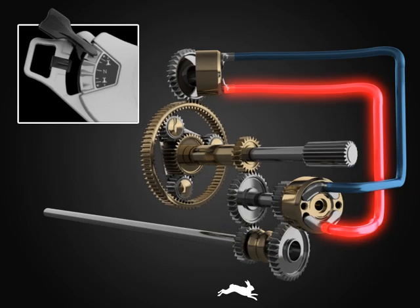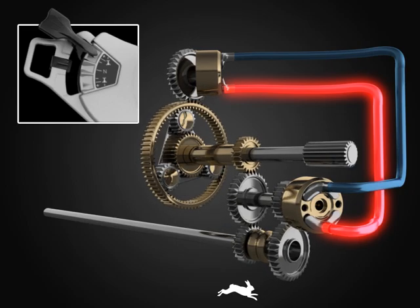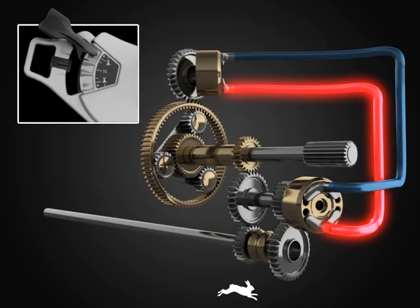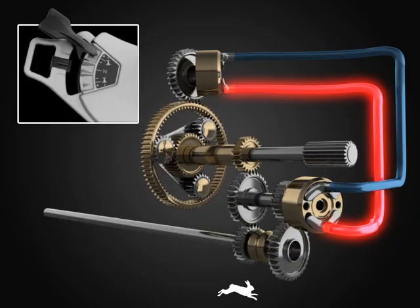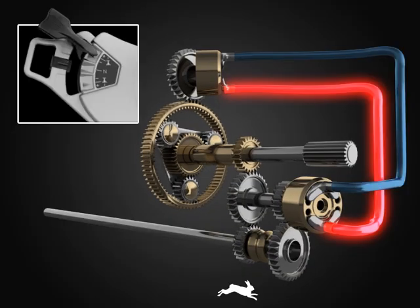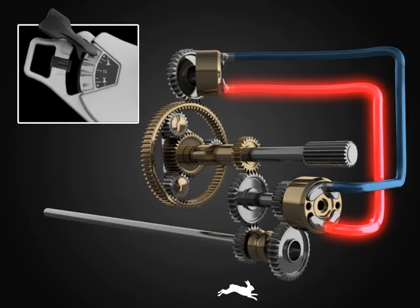As speed continues to increase, the hydraulic motor starts to swing in towards the neutral position. This increases pressure on the hydraulics, which in turn increases resistance on the ring gear.